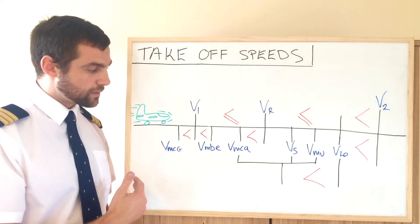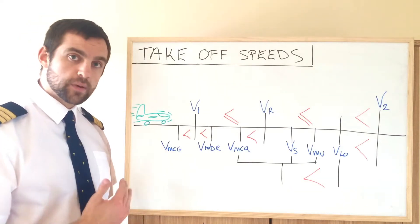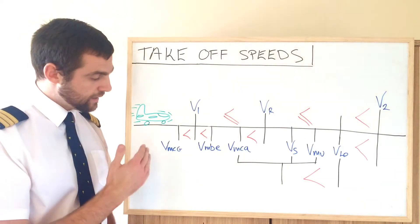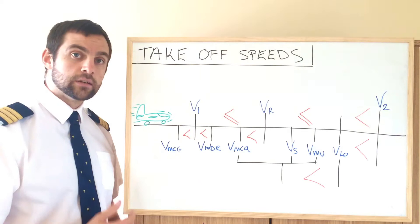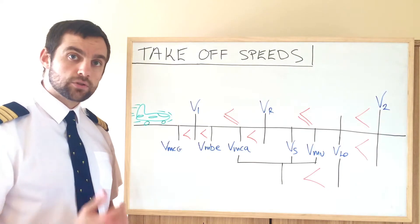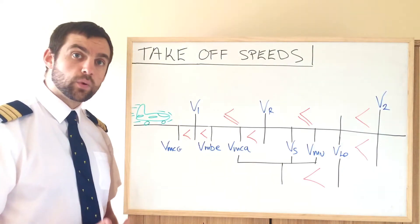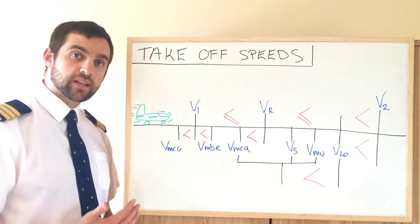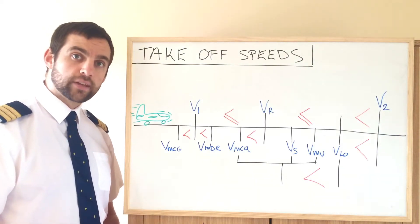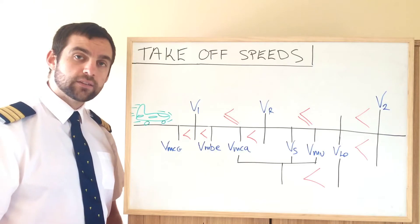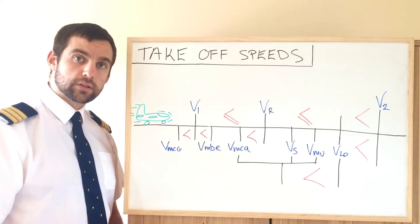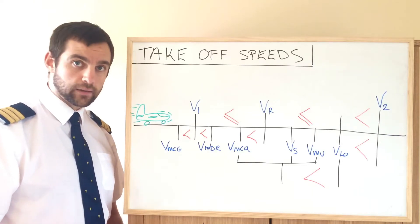So let's start right at the bottom. The first speed we're going to encounter is VMCG — minimum control on the ground. It's the speed which provides directional control of the aircraft in the event of the critical engine failure.